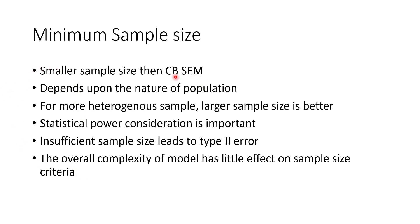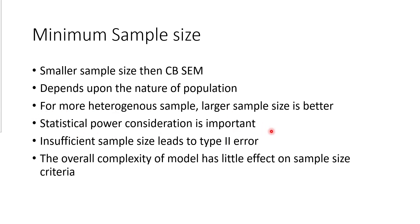However, we cannot say that our sample can be very small, because insufficient sample size can lead to a type 2 error — we fail to reject a null hypothesis that is actually false in the population. It is important to have a substantial sample. If we have a more heterogeneous population, we need a larger sample size. One important approach is to look at statistical power. PLS-SEM yields greater statistical power, but we can also use a formula like G-Power calculator or population characteristic tables to determine required sample size.